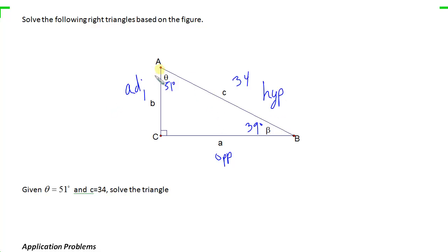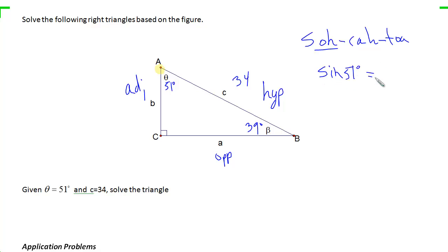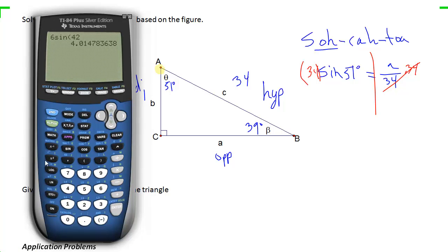To find the missing opposite side A, I use the sine ratio since I have opposite and hypotenuse. The sine of 51° equals A over 34. Multiplying both sides by 34 gives A = 34 × sin(51°). With the calculator in degrees, that's approximately 26.4.